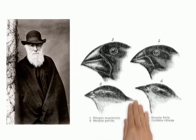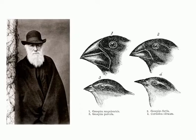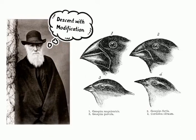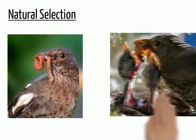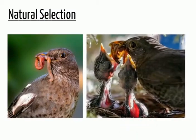Darwin rejected this idea, claiming instead that natural variations in organisms — which occur through a process he called descent with modification — would in fact alter the organism's ability to survive and reproduce. Organisms with variations that greatly increase their ability to survive would quickly outdo their competitors, increase in number, and may even go on to form entirely new species.